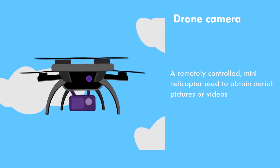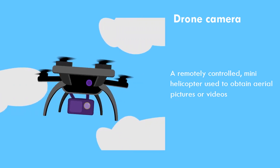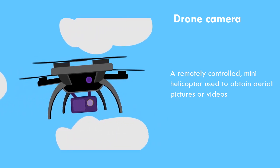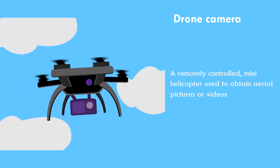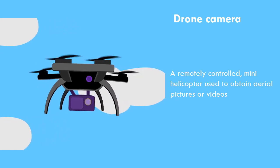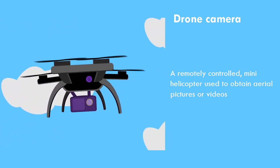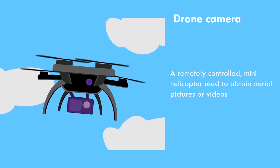Drone camera. It's a device that can be remotely controlled — a mini helicopter used to obtain aerial pictures or videos.